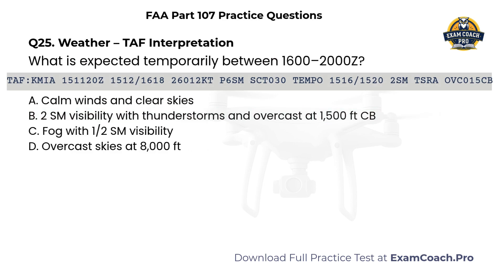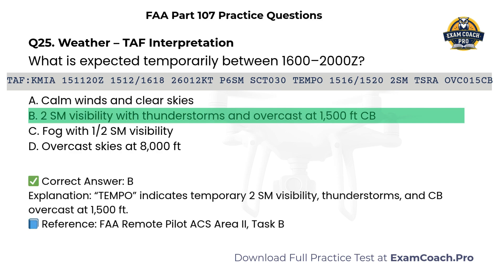Weather. TAF interpretation. Regard the following TAF. What is expected temporarily between 1600 and 2000 Zulu? A. Calm winds and clear skies. B. Two statute miles visibility with thunderstorms and overcast at 1,500 feet cumulonimbus. C. Fog with one-half statute mile visibility. D. Overcast skies at 8,000 feet. Correct answer: B. Tempo indicates temporary two statute miles visibility, thunderstorms, and cumulonimbus overcast at 1,500 feet.